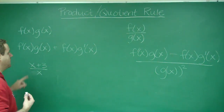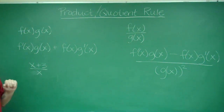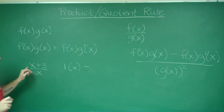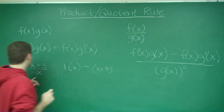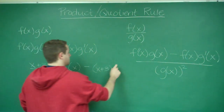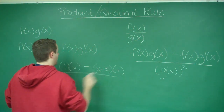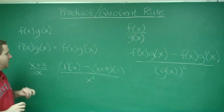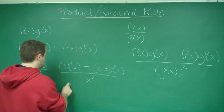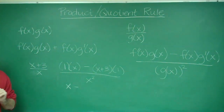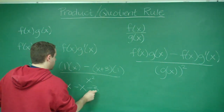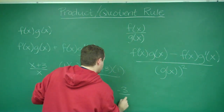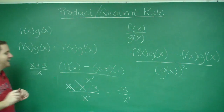First, let's apply the quotient rule. The derivative of the top — the derivative of (x + 3) is just 1 — times the bottom, minus the top itself times the derivative of the bottom, which is 1, all over the bottom squared. Since the bottom is x, we have x squared. That gives us x minus (x + 3) over x squared. Make sure you distribute the negative sign correctly: you get x minus x minus 3, all over x squared. The x's cancel out, leaving negative 3 over x squared.